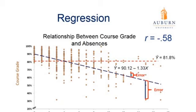You'll notice the error has decreased because of this predictor. If we add absences into our equation, we can reduce the error for any individual student when predicting their course grade. Instead of just estimating grade from the average of course grades, we also account for absences. Our new equation, once we add a predictor, will be: y-hat equals 90.12 minus 1.33 times x, where x is the number of absences.